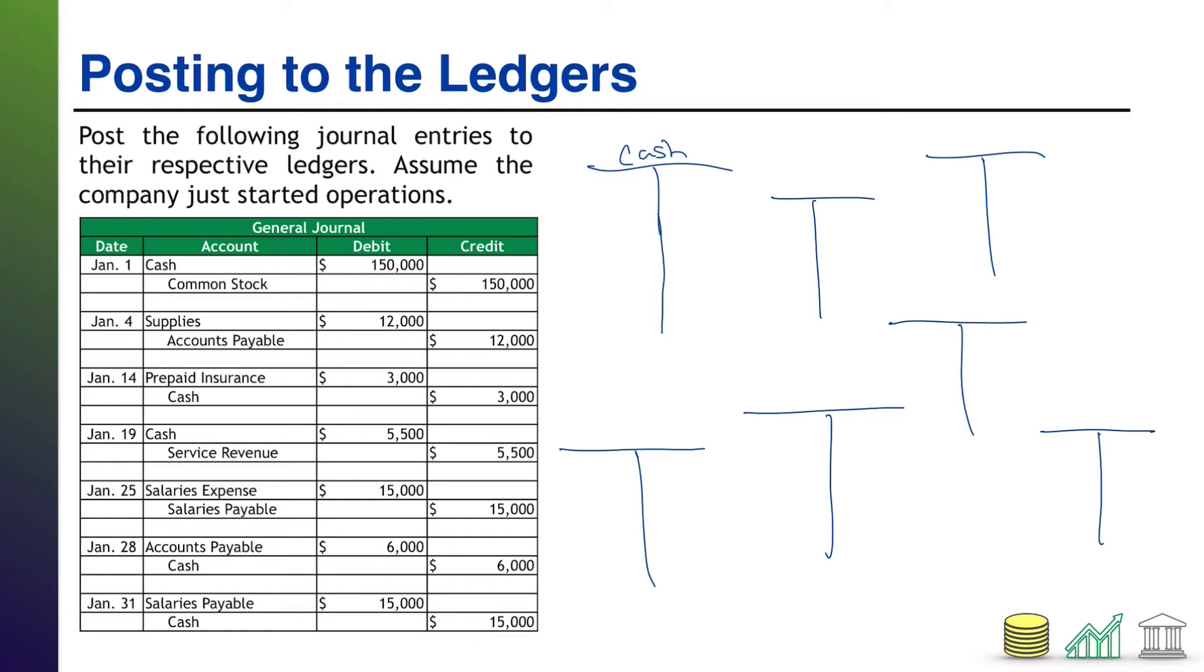So, of course, I need an account for cash. Looks like I need an account for common stock. Looks like I need a supplies account. I'm going to need an accounts payable account. Some prepaid insurance. I already have cash. Some service revenue. Some salaries expense. So salaries expense. And also some salaries payable. So I'll create another one there. Salaries payable. I'm going to need accounts payable. I already have that. I already have cash. I already have salaries payable. I already have cash. Alright. So that's it. So it looks like I have a total of eight ledgers over here. Remember, T accounts and ledgers are essentially one and the same, just two different presentation styles.